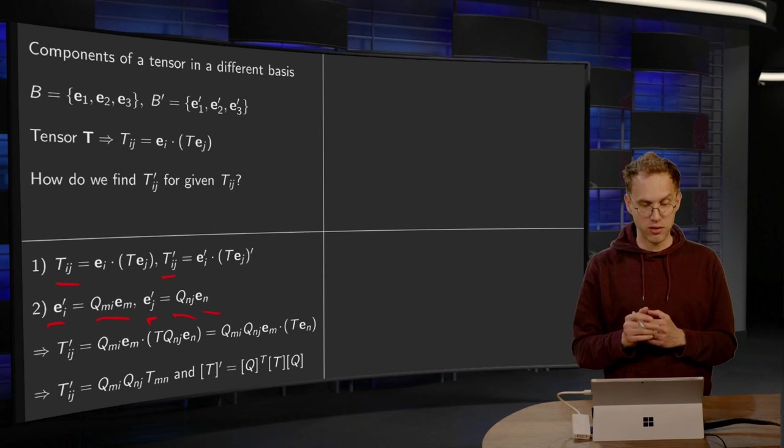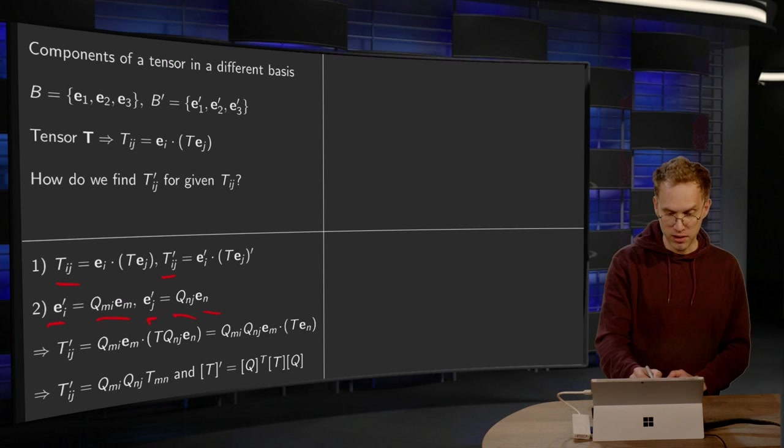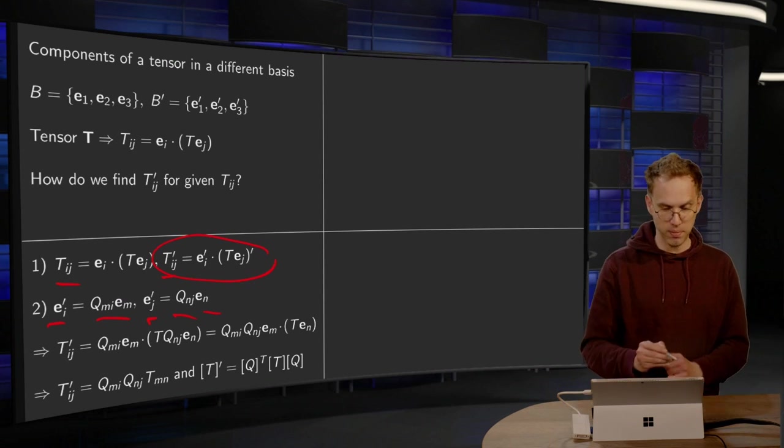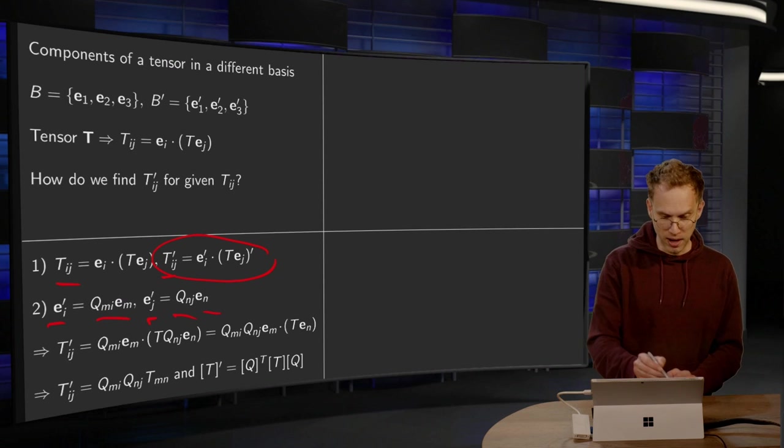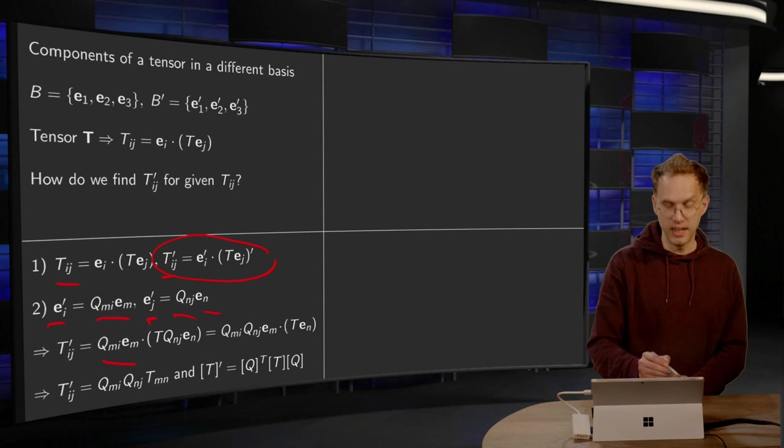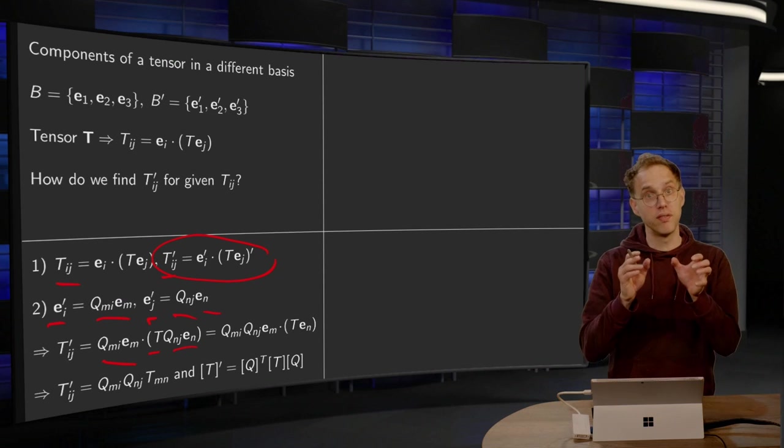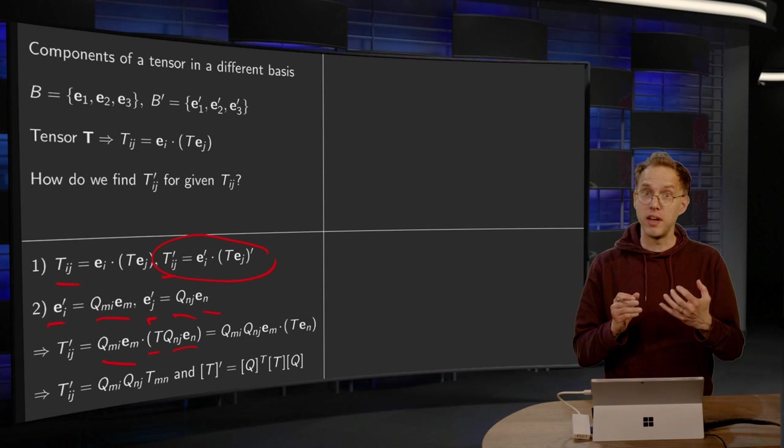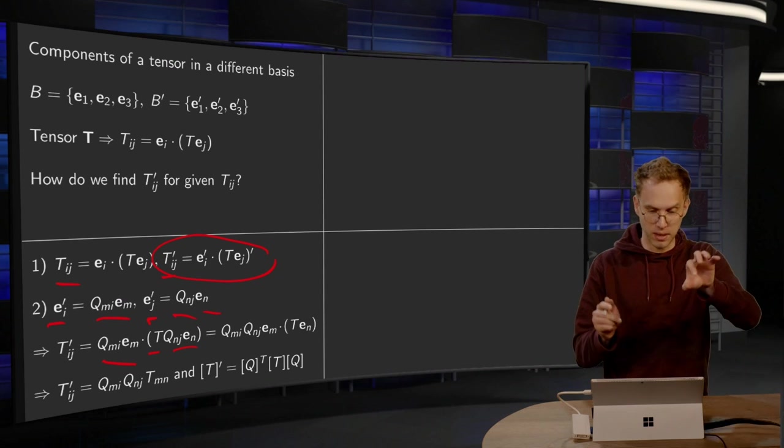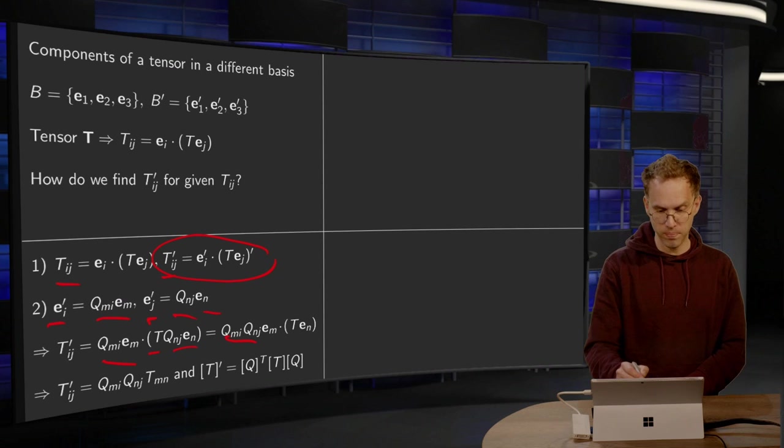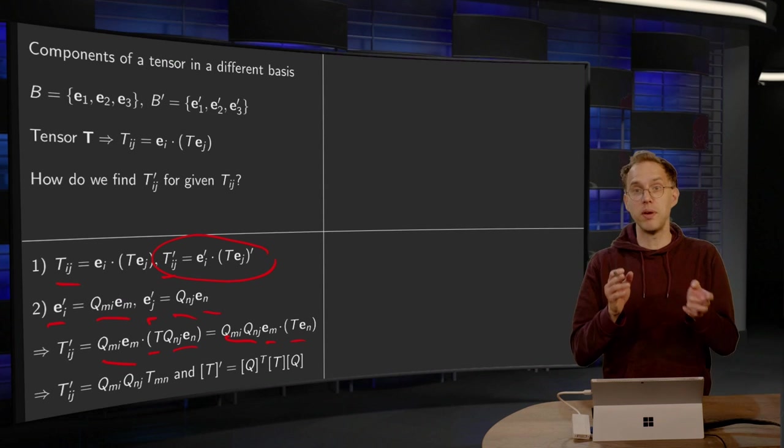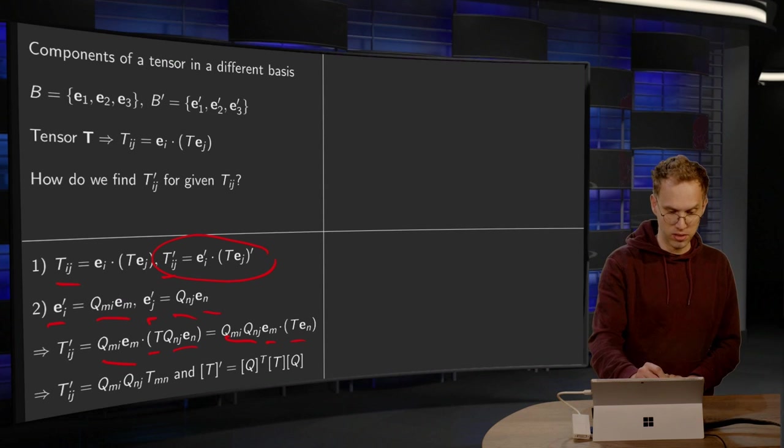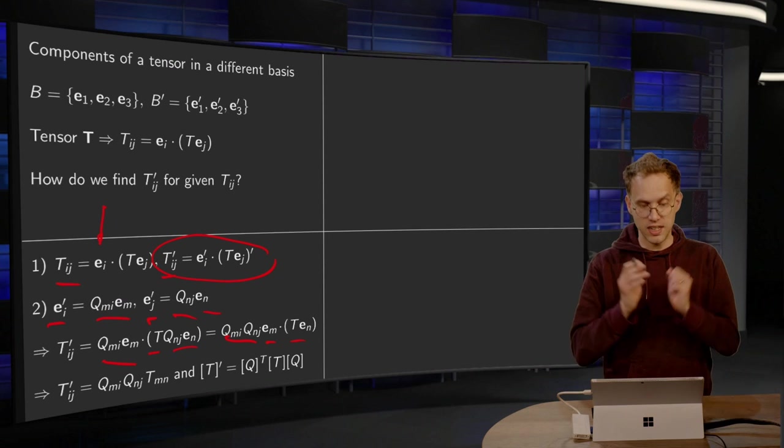And this allows us to compute our T'_ij using this formula. We have an e'_i, for that we have a Q_mi·e_m in our product with T·e_n. Now remember the Q_mi and Q_nj, they are just numbers, so you can take them in front. And we are left with e_m in our product with T·e_n. But e_m in our product with T·e_n, that's using this rule, just the T_mn.